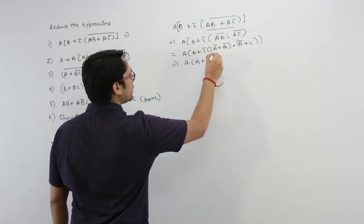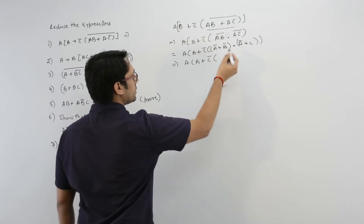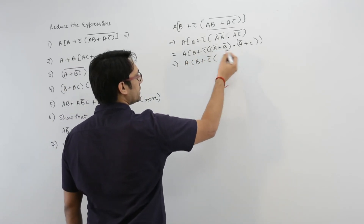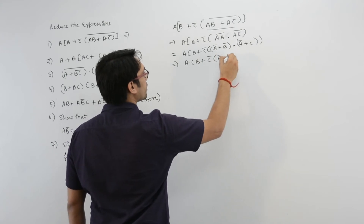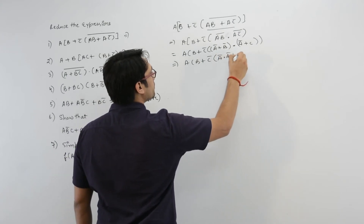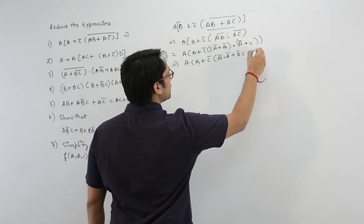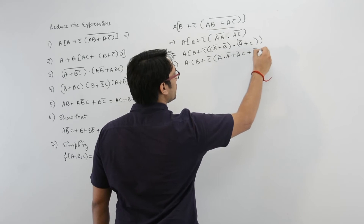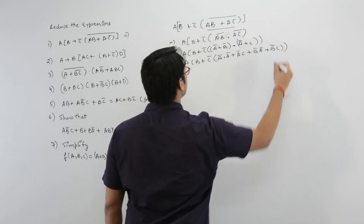B plus C complement — expanding the bracket — it is a complement dot a complement, plus a complement C, plus b complement a complement, plus b complement C.